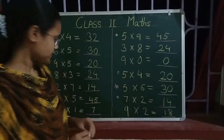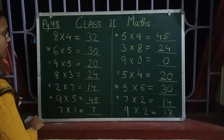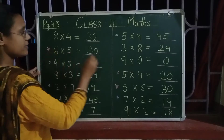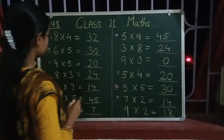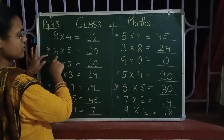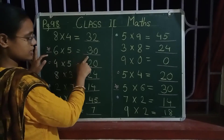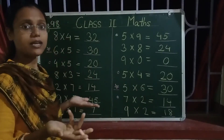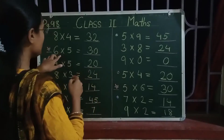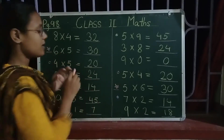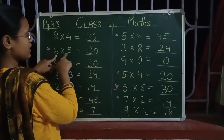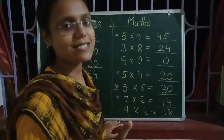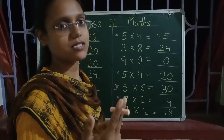Now let us see. You will see that there is a star mark here, and here also you will see a star mark. 6 into 5 is 30, and 5 into 6 is 30. The answer is the same. If you look closely, you will find that the numbers are also the same — just the places are different.